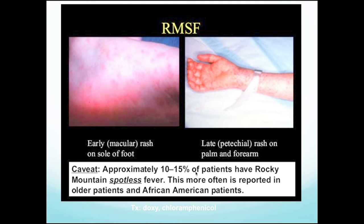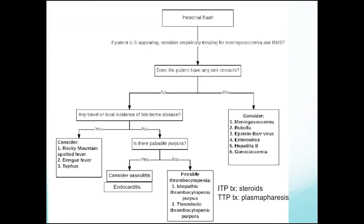For Rocky Mountain spotted fever, similar to meningococcal - a lot of times we think it's just petechiae, but it can present early as just macules looking like a viral exanthem. The giveaway is the location: wrists, ankles, palms and soles. Importantly, a lot of patients might not even present with a fever, so your travel history really comes into play.